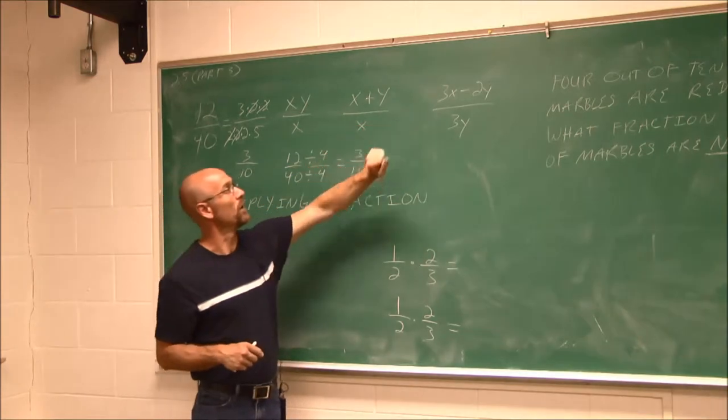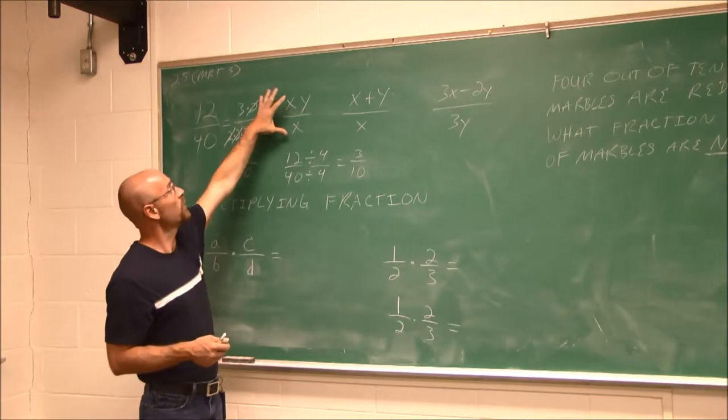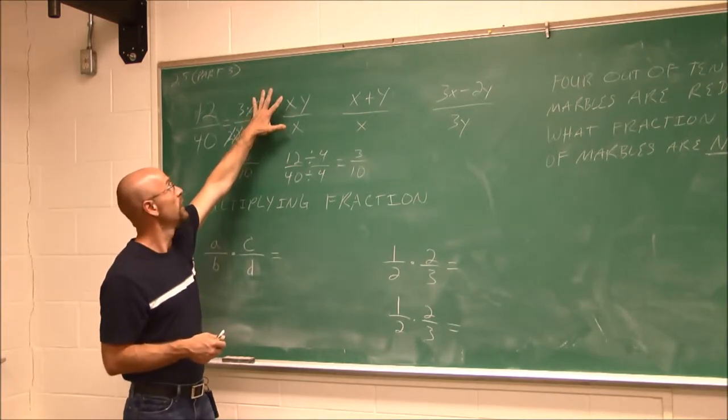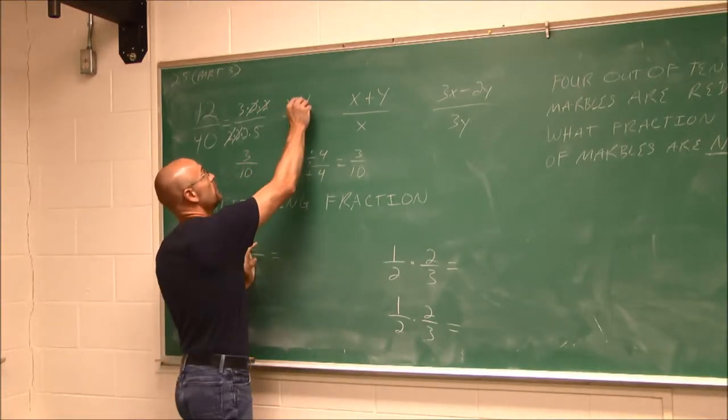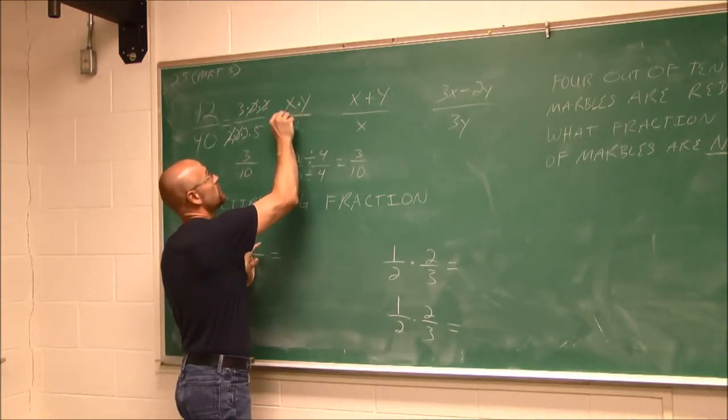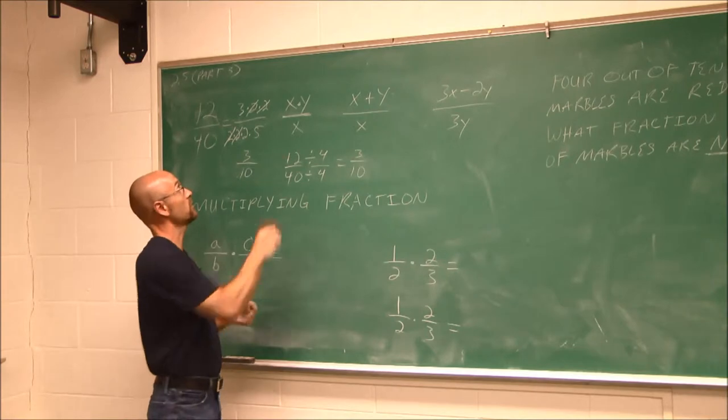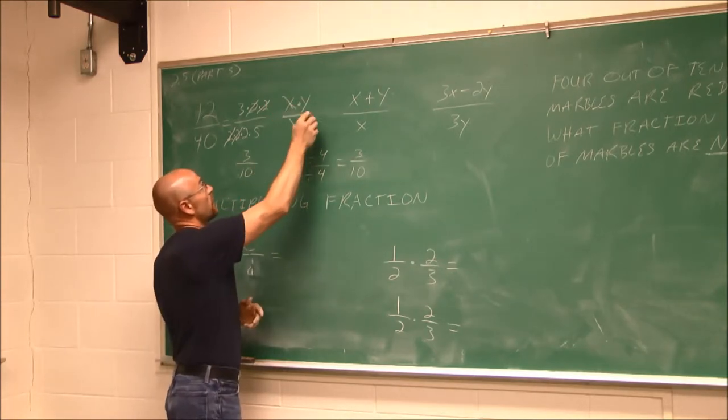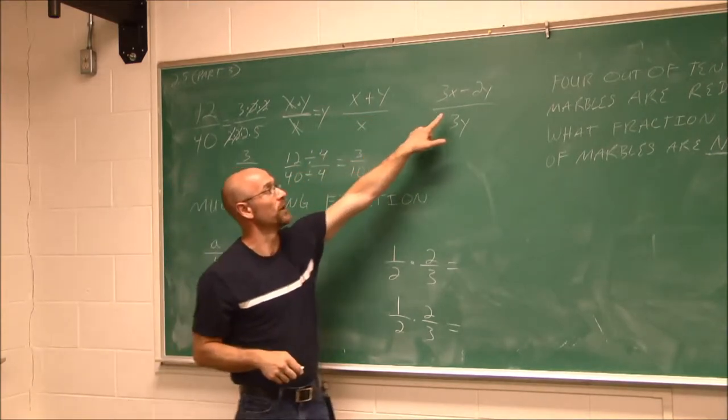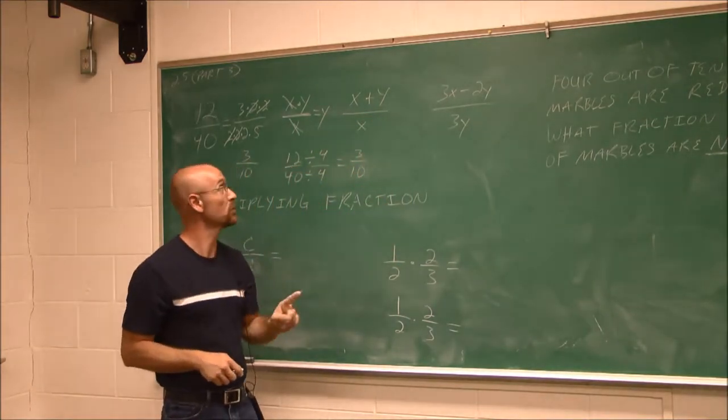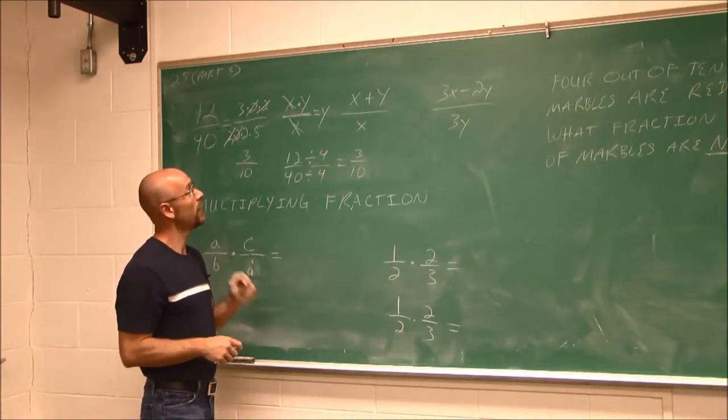There's one thing I want to note about some fractions, especially when they contain variables. Here we have a rational expression, x times y over x. The only operation here is multiplication and division. When the only operation is multiplication or division, you can do what we did here. You can just cancel. This x cancels that x, leaving me with just y. But if we have a sum or a difference, you cannot cancel terms.